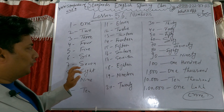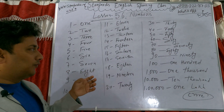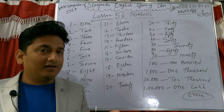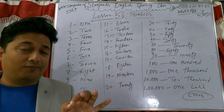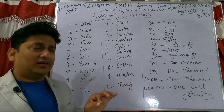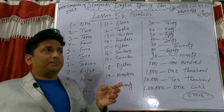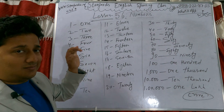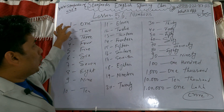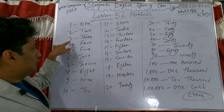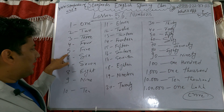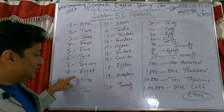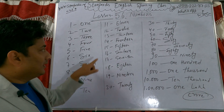Because when speaking, 4 you might say correctly, but 14 you might say as 40, and 40 might become 14. This difference happens because of pronunciation. Correct pronunciation matters. So please, let's start.